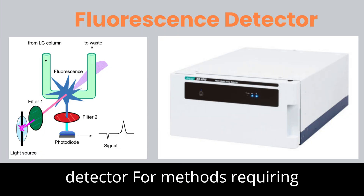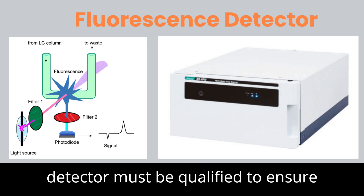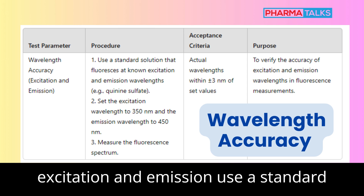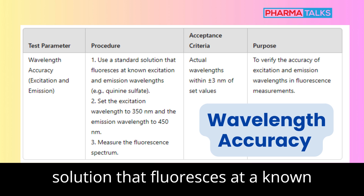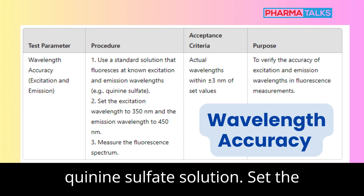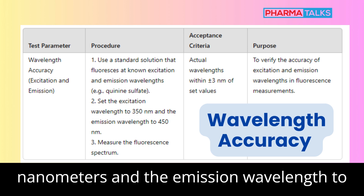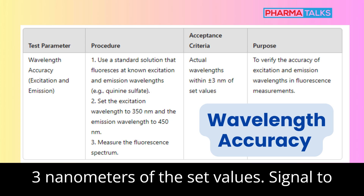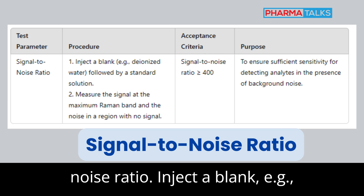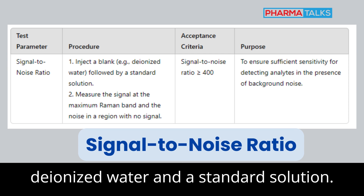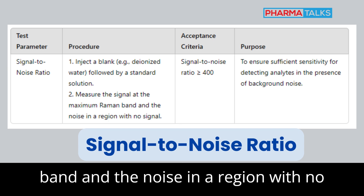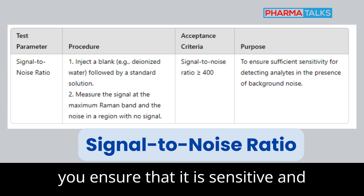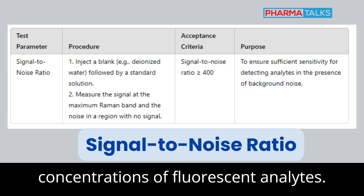6. Fluorescence Detector. For methods requiring fluorescence detection, the fluorescence detector must be qualified to ensure accurate detection of specific excitation and emission wavelengths. Wavelength Accuracy (Excitation and Emission): use a standard solution that fluoresces at a known excitation and emission wavelength, e.g., quinine sulfate solution. Set the excitation wavelength to 350 nm and the emission wavelength to 450 nm and measure the fluorescence spectrum. The actual wavelength should be within ±3 nm of the set values. Signal-to-Noise Ratio: inject a blank (e.g., deionized water) and a standard solution. Measure the signal at the maximum Raman band and the noise in a region with no signal; the signal-to-noise ratio should be ≥400. By qualifying the fluorescence detector, you ensure that it is sensitive and accurate enough to detect low concentrations of fluorescent analytes.